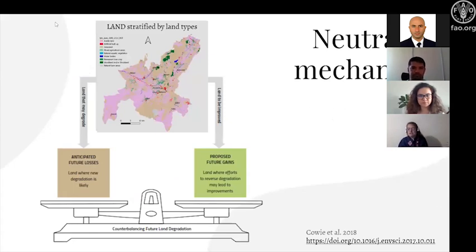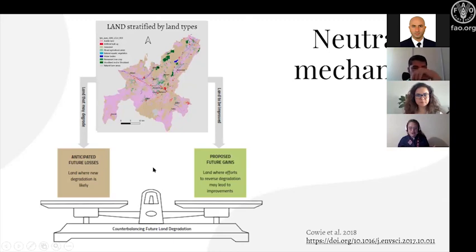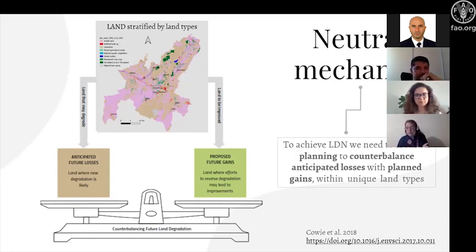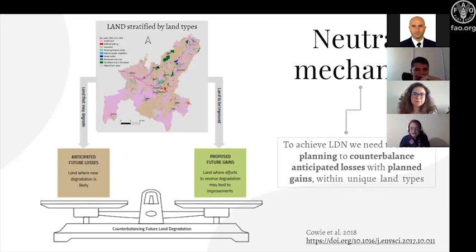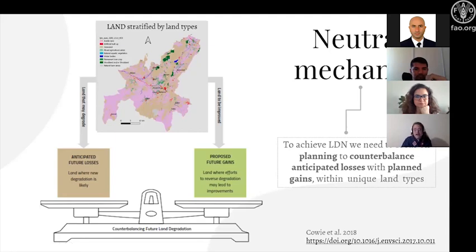Why is it important to link land degradation neutrality to land use planning? The neutrality mechanism is based on counterbalancing future losses with future gains. To achieve this, land use planning is key. If you can anticipate during land use planning which areas will lose natural capital or be degraded, and take this into account to anticipate possible gains, then you are doing a lot for achieving land degradation neutrality. It's really important that land use planners are aware of this and try to consider it — because if not, it will be very difficult to achieve LDN.